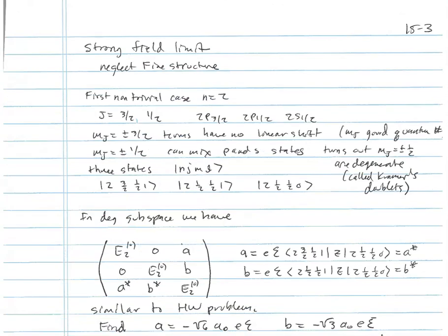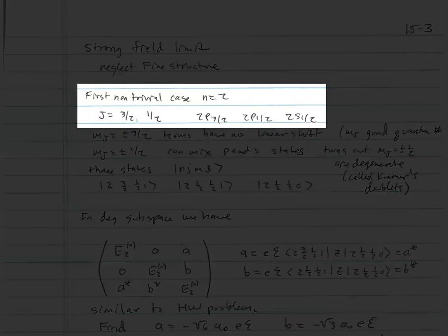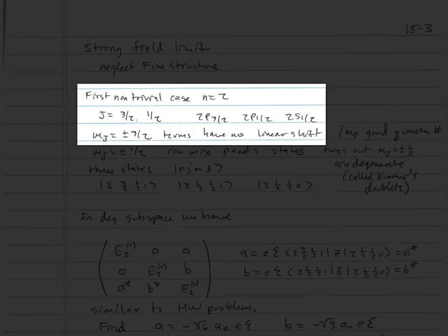Let's focus now on the strong-field limit, where we neglect the fine structure. The first non-trivial case corresponds to n=2, where we have j=3/2 and j=1/2 — three sets of states: 2p_{3/2}, 2p_{1/2}, and 2s_{1/2}. The states in 2p_{3/2} with mj = ±3/2 have no linear shift because mj is a good quantum number, meaning they can't couple to anything else except a state with mj = 3/2. But there's only one such state, and because V_Stark has odd parity it can't couple a state to itself, so those linear shifts are zero.